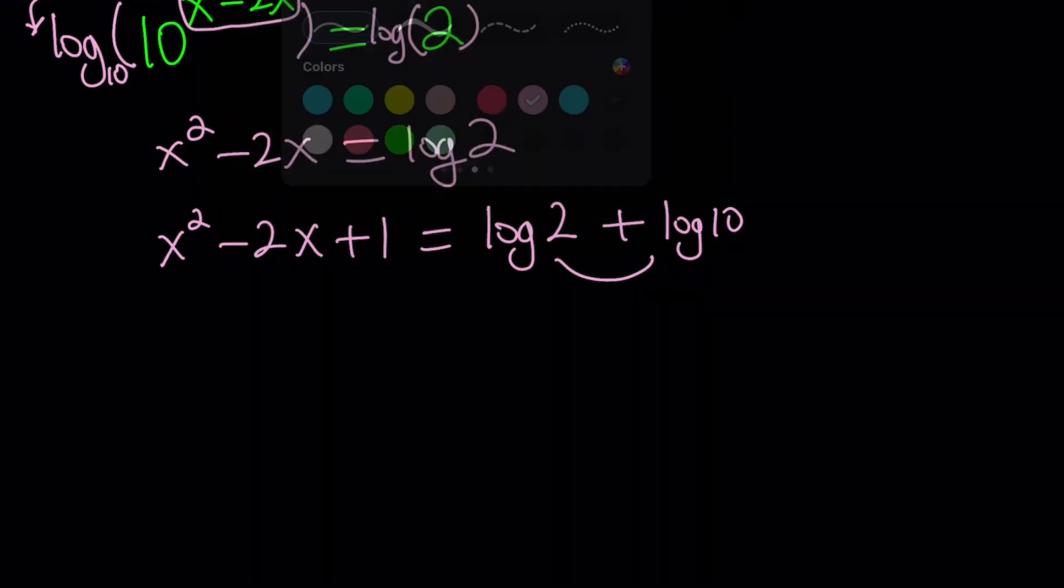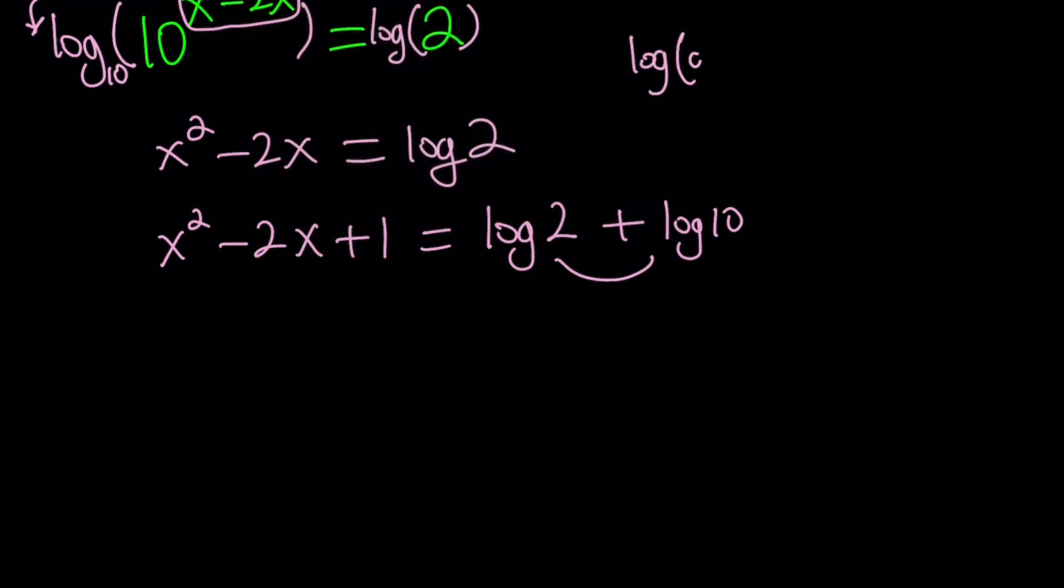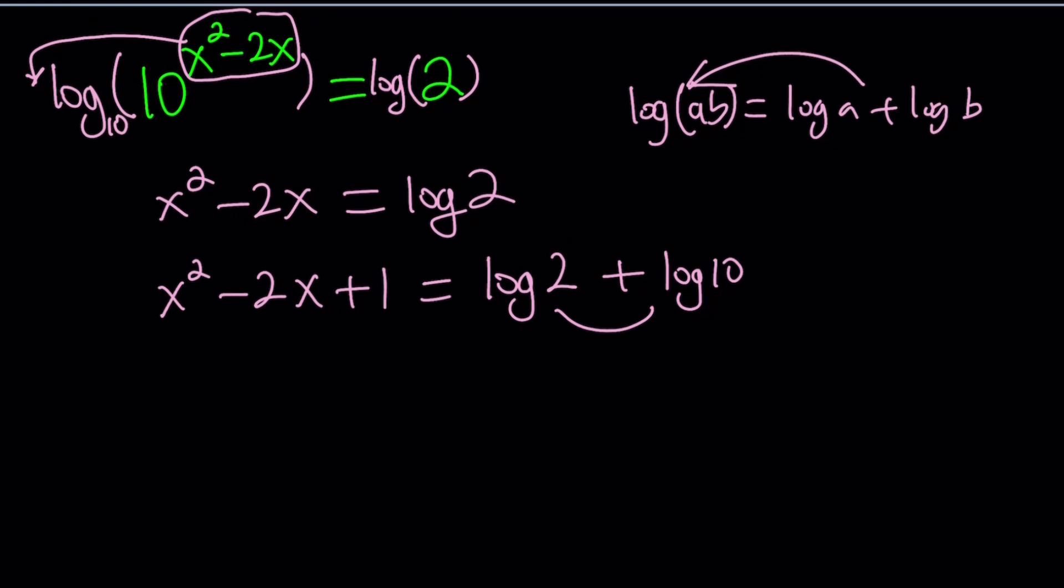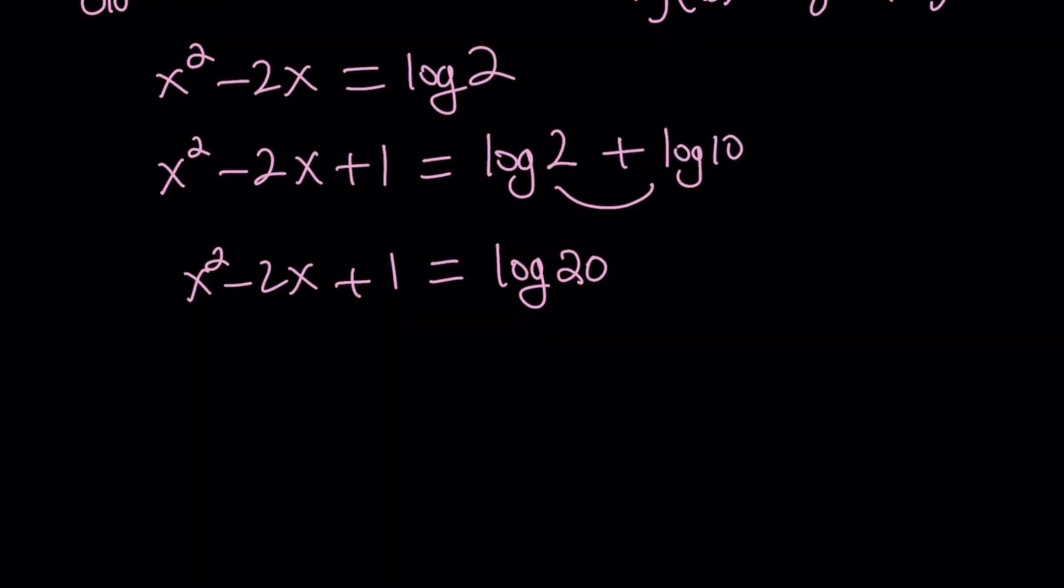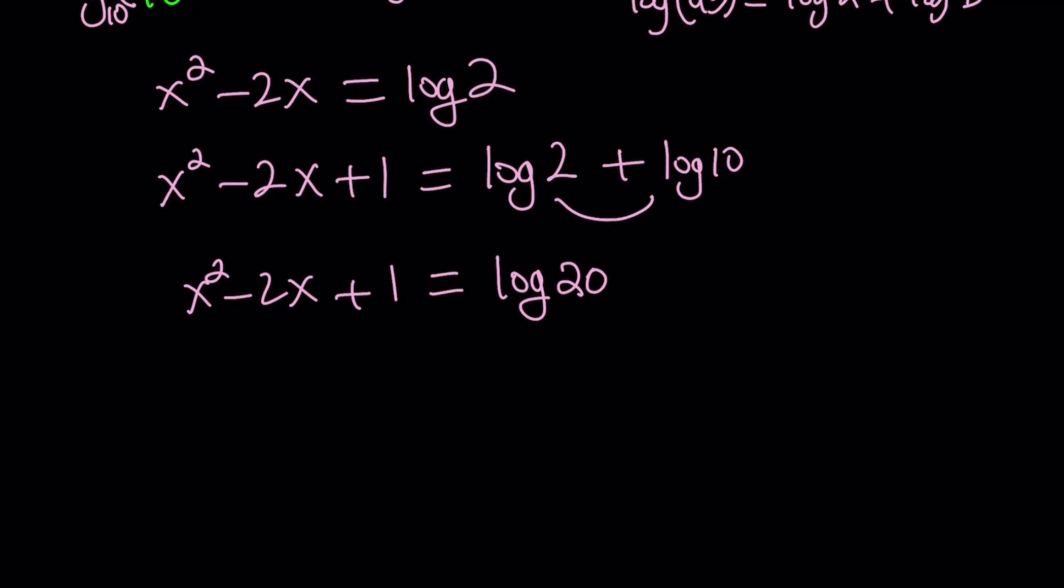So what is the rule? If you have log a b you can write it as log a plus log b. Which means if you have log a plus log b you can write it as log a b. In other words you can condense or expand. In this case we're going to condense this into log 2 times 10 which is 20. It doesn't really matter if you write it like this or log 2 plus 1. Some people consider 1 plus log 2 simpler because 2 is prime. It doesn't matter much.